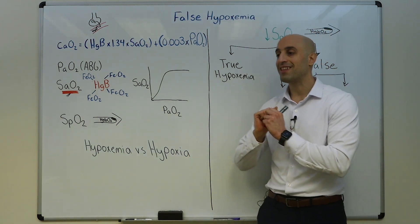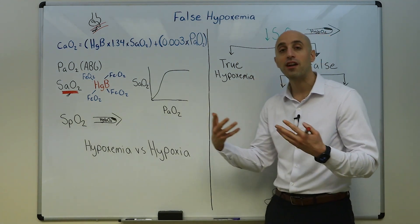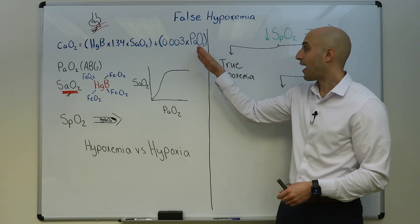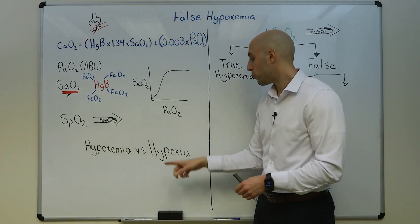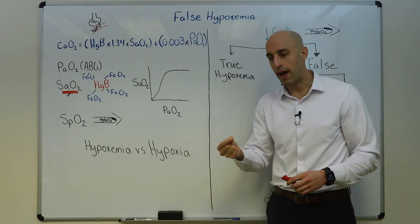Because when your cells don't have oxygen they shift to anaerobic metabolism. Can you have hypoxia without hypoxemia? Absolutely. Imagine someone who is in shock and can't deliver enough blood to the cells so the cells won't get enough oxygen.